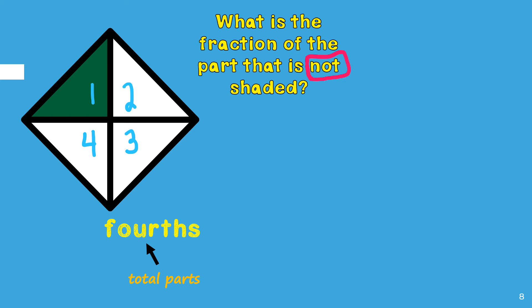Now I need to count the number of parts that are not shaded or colored: one, two, three. There are three parts that are not colored, so that number in word form will be placed in front of fourths. This number represents the number that is not shaded. What is the fraction of the part that is not shaded for this example? Three fourths.